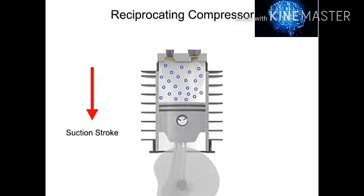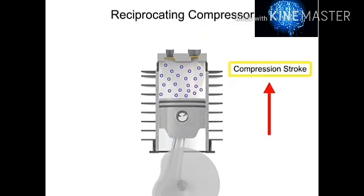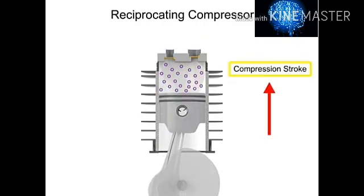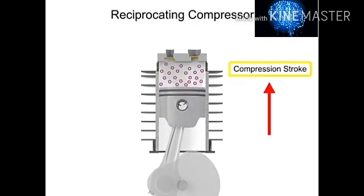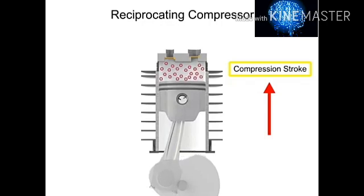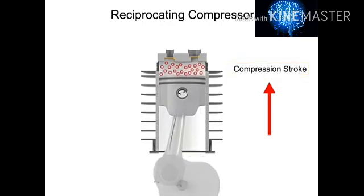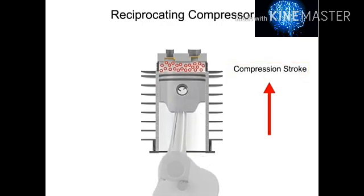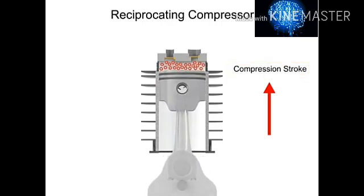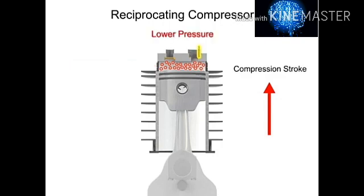As the piston begins its upward compression stroke, the volume within the cylinder decreases. The decrease in volume causes the pressure within the cylinder to increase. The increase in pressure opens the outlet valve and compressed air discharges from the cylinder.